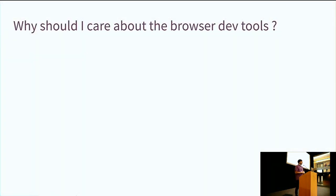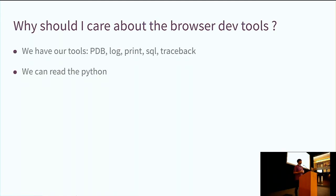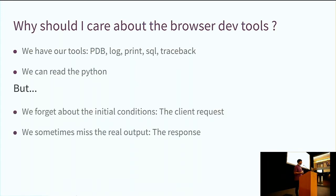So why should you care about the browser developer tool as a back-end developer? You have your own tools to get information — you can put a PDB in the code, you can read the log, you can print everything you want in Python. You can even go into the database with SQL. The traceback has no secret for you, and you can read the Python code. So basically, you know exactly what Odoo is doing when a transaction starts.